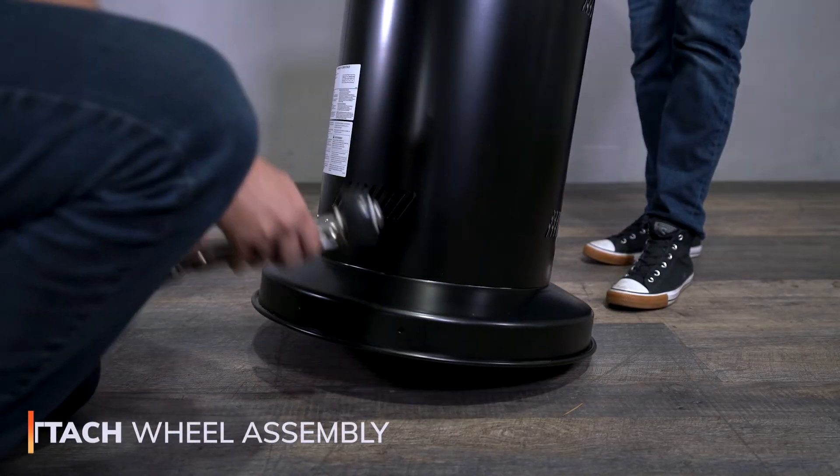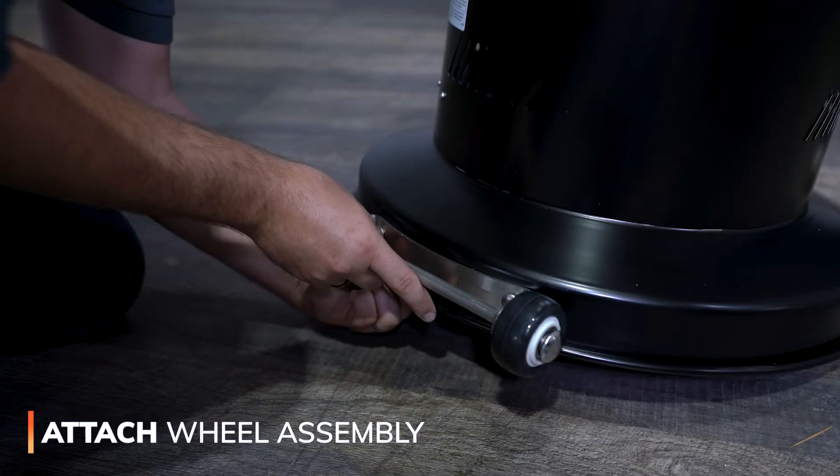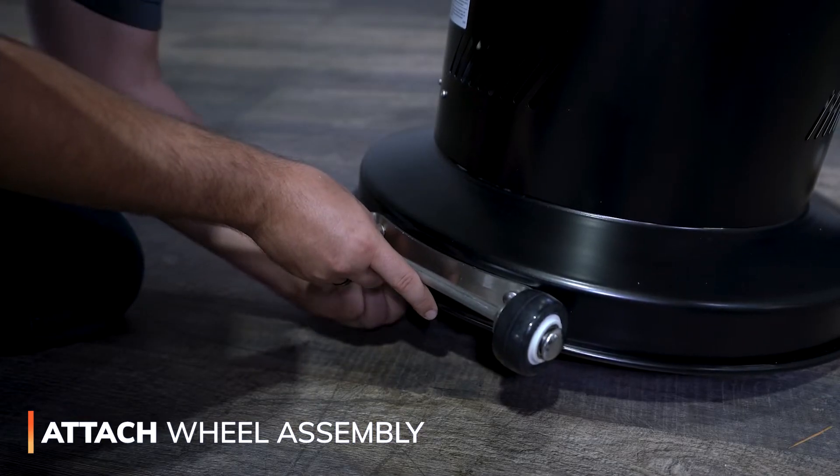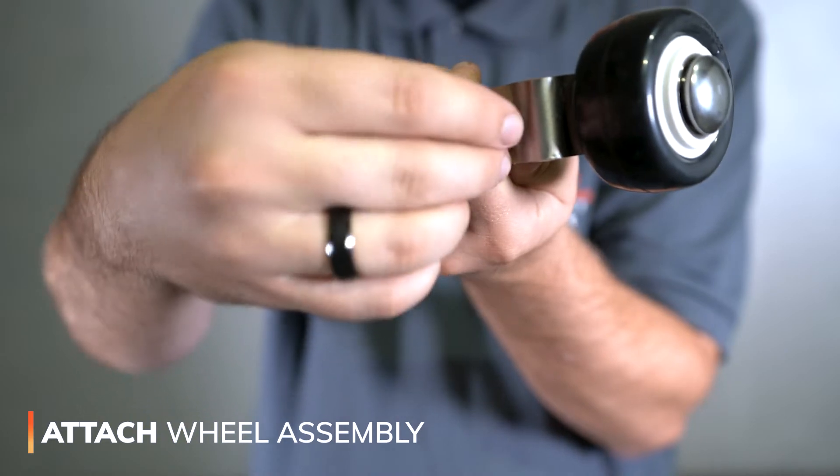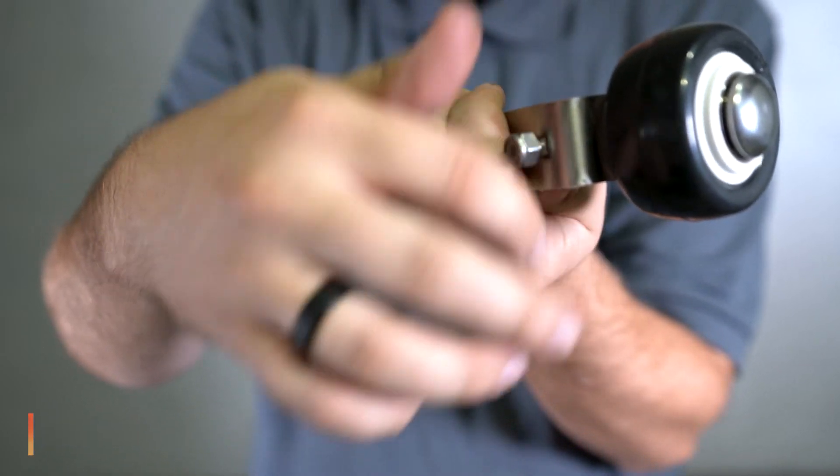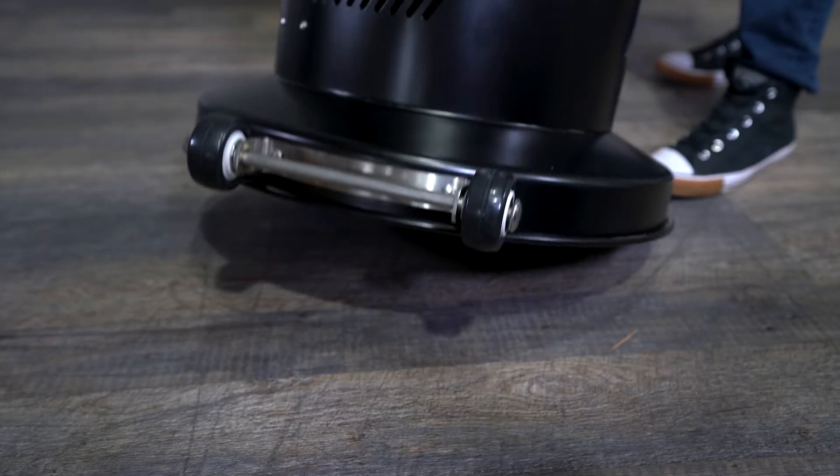Now, we'll attach the wheel assembly to the heater. With assistance, we're going to position the wheel assembly with the mounting holes at the bottom of the base. Placing the bolts provided into the mounting holes, we'll tighten the two nuts using an adjustable wrench or socket until the wheels feel nice and secure.